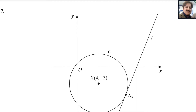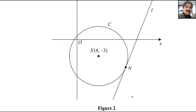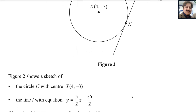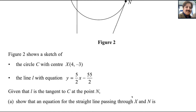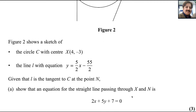This is question number 7 from Pure Math 2 Pearson and Excel A Level Exam, taken in October 2023. Figure 2 shows a sketch of circle C with center X at coordinates (4, -3). The line L has equation y equals 5 over 2 x minus 55 over 2. Given that L is the tangent to C at the point N, show that the equation for the straight line passing through X and N is 2x plus 5y plus 7 equals zero.